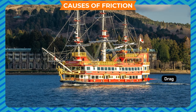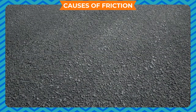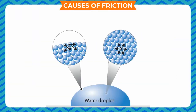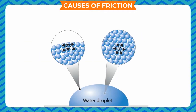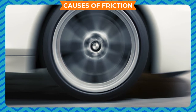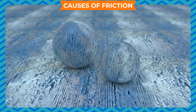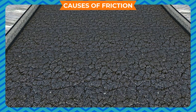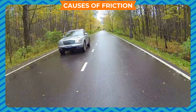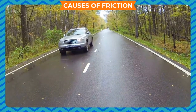Friction comes into play due to several factors such as roughness of the surface, adhesion between molecules, and deformation effects. The type of friction depends on the type of motion. A surface which is rough, has many grooves and is irregular is said to have greater friction, and movement of objects on such a surface would be difficult.